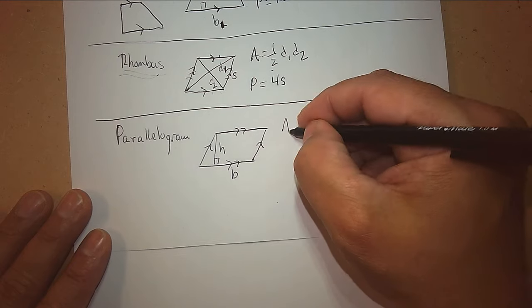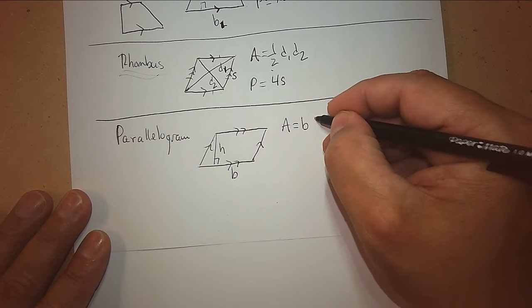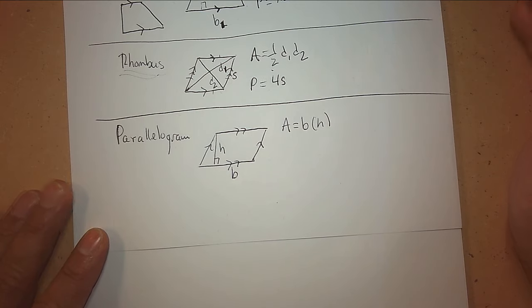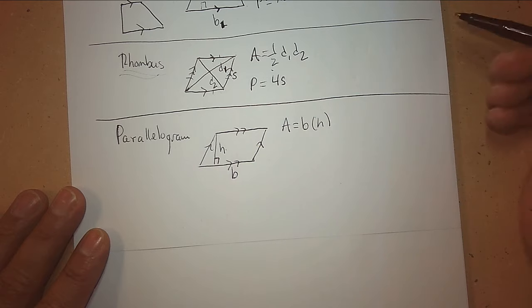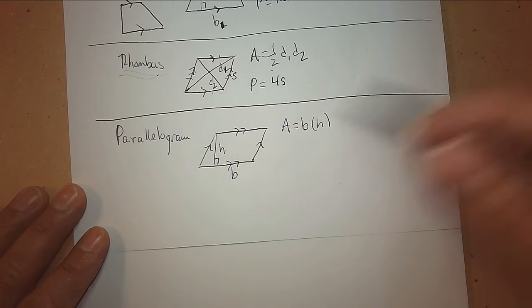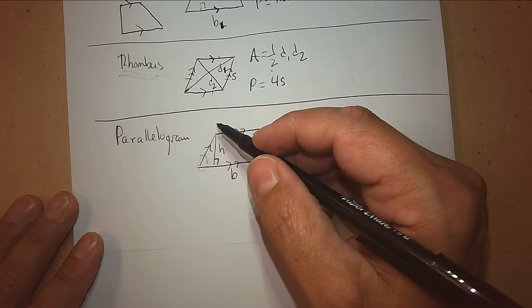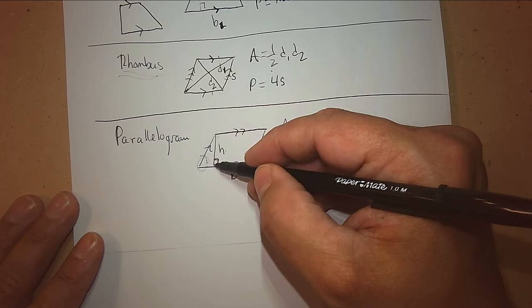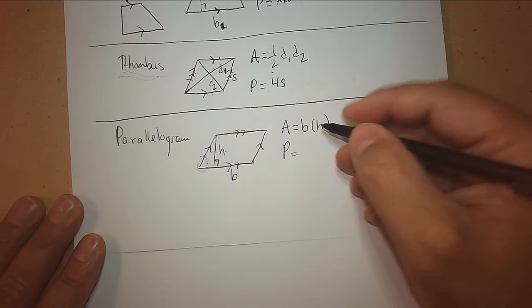A parallelogram also has four sides. And opposite sides are parallel. And they're the same length. To find the area of a parallelogram, it is simply the base times the height. And I want you to notice whenever we use the word height, it always makes an angle of 90 degrees. If a side is slanted, it doesn't make an angle of 90. That is not the height. It has to make an angle of 90 degrees to be the height of that shape. In the perimeter again, we're going to add all sides.